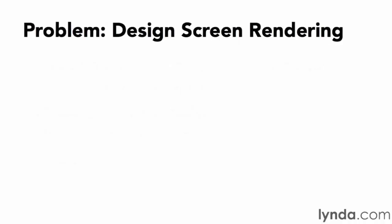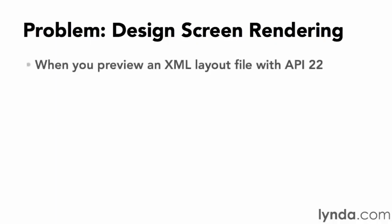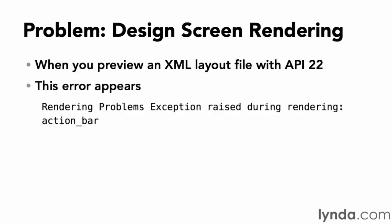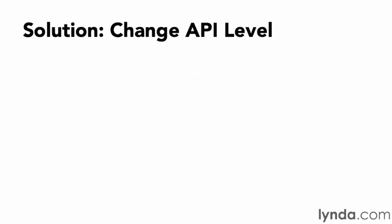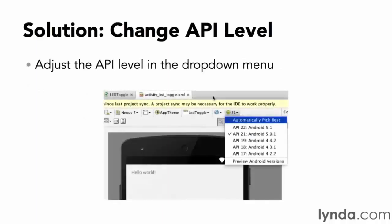The second troubleshooting tip is about layout design. An Android XML layout defines the appearance of a screen and Android Studio has a nice preview capability to see what the layout file looks like. With the introduction of API 22 (Android 5.1), Android Studio started showing a rendering error: 'Exception raised during rendering — action bar.' This happens when you open an XML layout file in preview mode. To solve this, change your API level back to API 21 using the drop-down menu in the preview screen, and the preview should work correctly.